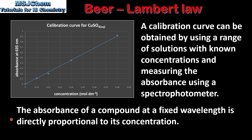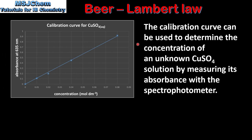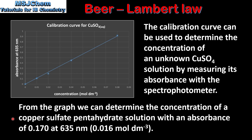The calibration curve can be used to determine the concentration of an unknown copper sulfate solution by measuring its absorbance with the spectrophotometer. From the graph we can determine the concentration of a copper sulfate pentahydrate solution with an absorbance of 0.170 at 635 nanometers. On the y-axis we find the point of absorbance at 0.170, and that gives us a concentration of 0.016 moles per decimeter.